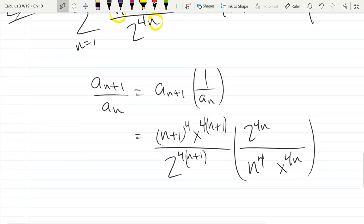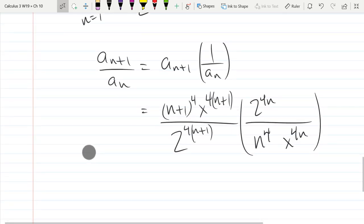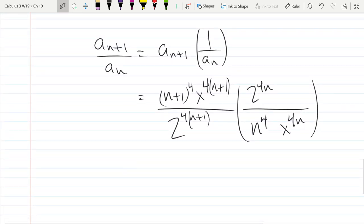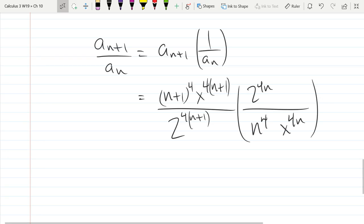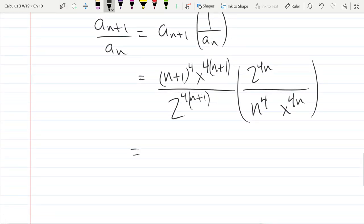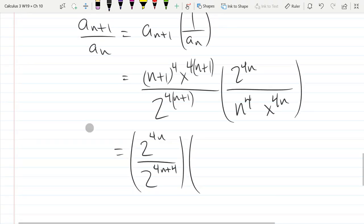Alright, so the way we are going to simplify is we're going to re-associate the multiplication, so we'll be commuting terms. So let's put the simplest terms out front. I think the base 2 will be probably the easiest term. So we've got 2 to the 4n divided by 2 to the 4n plus 4. That's our first grouped up term.